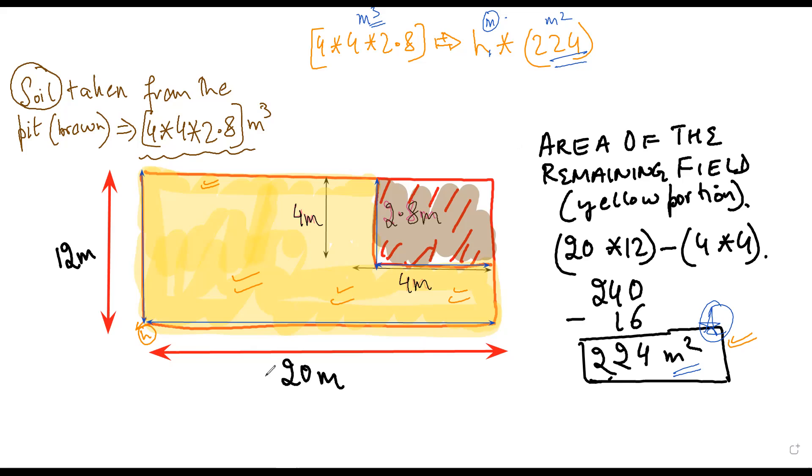Yes, it makes sense. Yes. Now when you calculate the value of h, it will be 4 into 4 into 2.8 upon 224. That will be equal to 0.2 meter. Now if you calculate this, let me give you the answer. This will be 4 into 4 into 2.8, that will be 4 into 0.8 divide by 224, that will be equal to 0.2 meter.